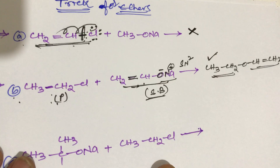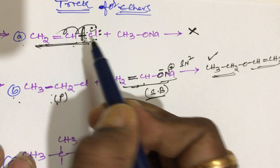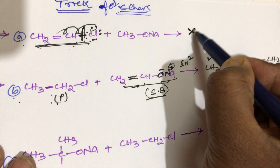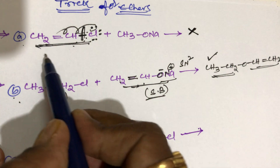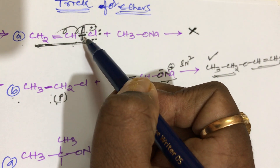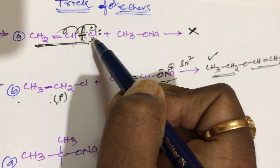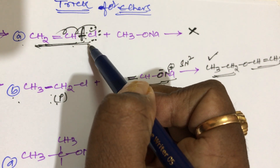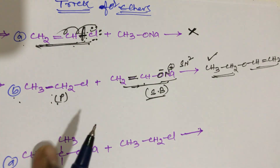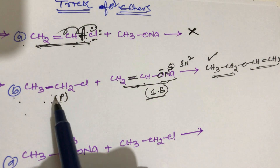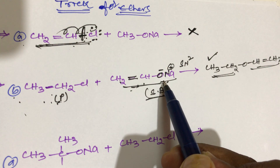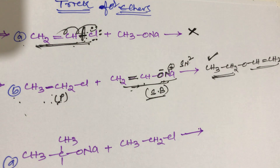What about the first compound? Vinyl halides cannot give ethers. In vinyl chloride, a partial double bond character will be developed. That is why bond breaking is not easy, and they do not give ethers. But in compound B, it is the primary alkyl halide. Primary alkyl halide in the presence of strong base follows the SN2 mechanism and gives ether. This is a simple trick.